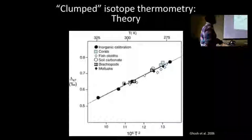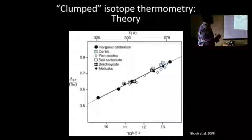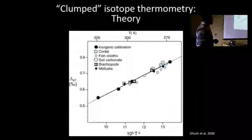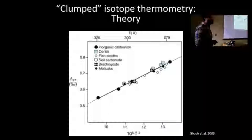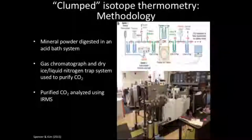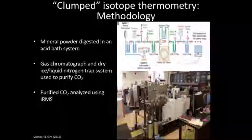From that, we can make graphs where temperature — plotted as 10 to the 6th over temperature squared — is on one axis, versus the prevalence of the Δ47 isotopologue in the mineral. To get this Δ47 measurement, we essentially digest the mineral — in this case we're using carbonates like limestone, snail shells, tufa, any carbonate material. We produce CO2 gas, purify it by removing water and nitrous oxides, then measure it on a mass spectrometer, measuring the ratios between masses 47, 45, 44, and 49.